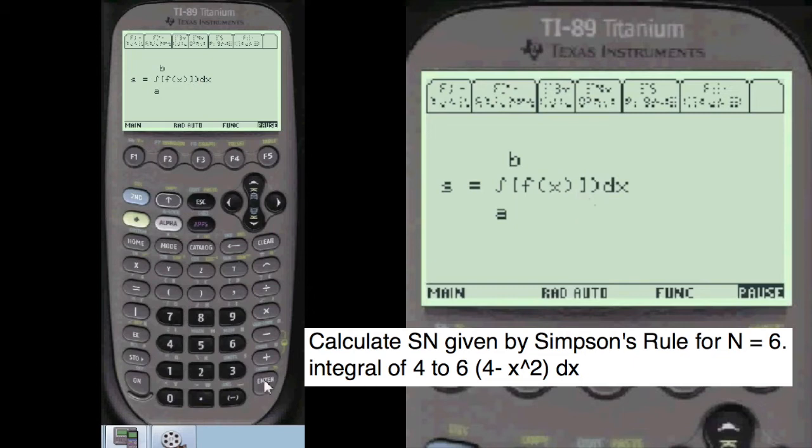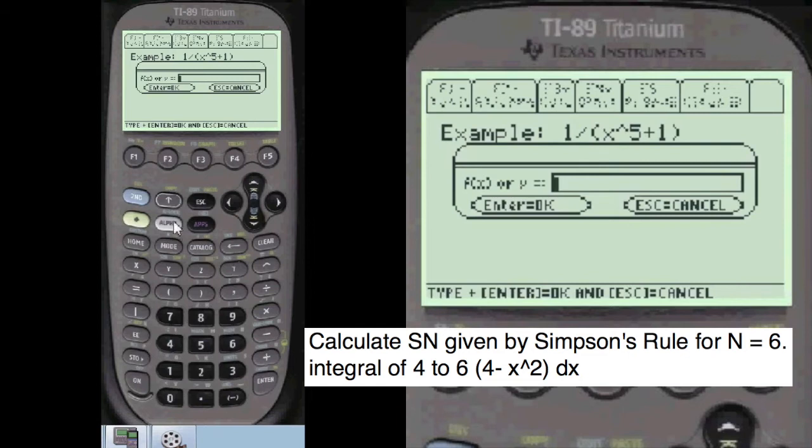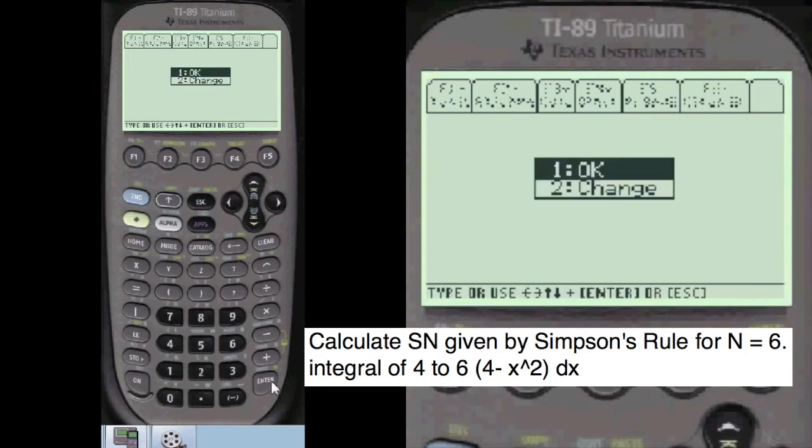So we're going to enter our function. The function is, you have to press alpha before you enter anything in these entry lines here in my programs. Alpha 4 minus x squared. I always show you what you've entered. You can change it if you want.